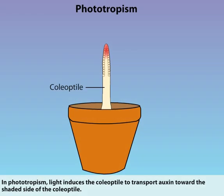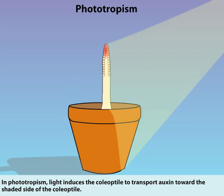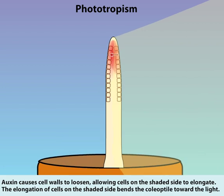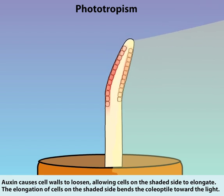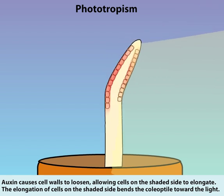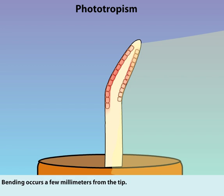In Phototropism, light induces the coleoptile to transport auxin toward the shaded side of the coleoptile. Auxin causes cell walls to loosen, allowing cells on the shaded side to elongate. The elongation of cells on the shaded side bends the coleoptile toward the light. Bending occurs a few millimeters from the tip.